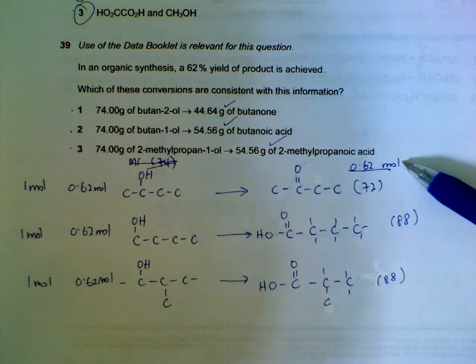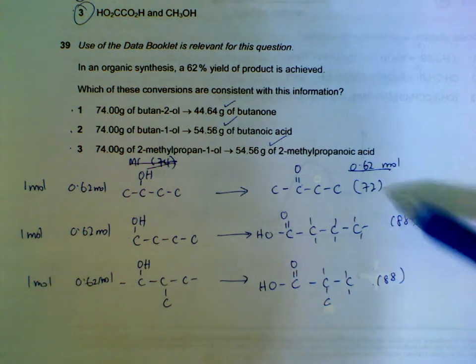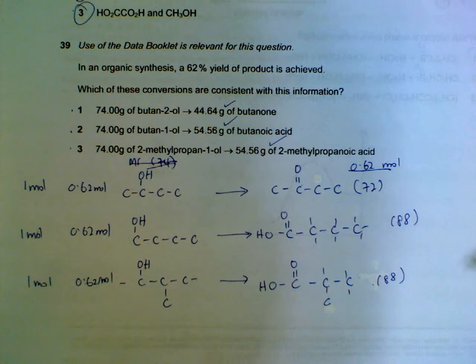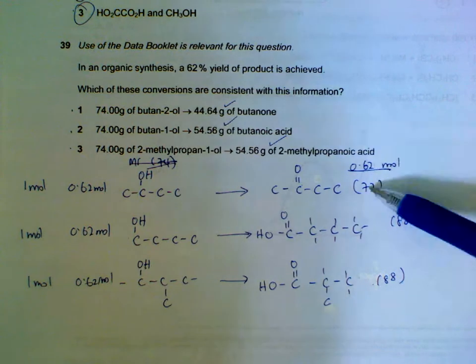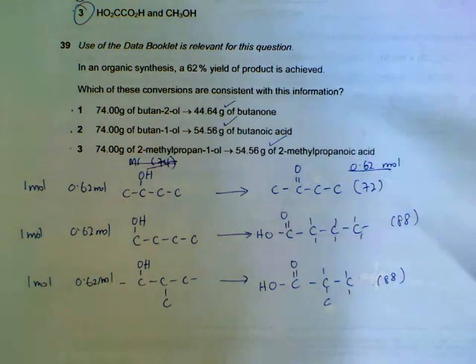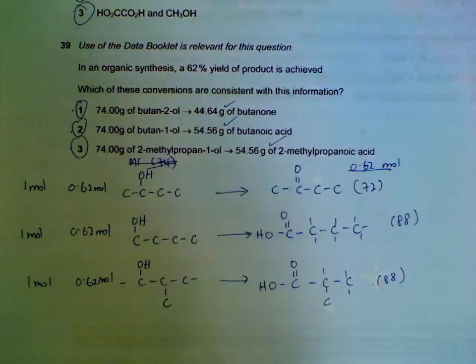How can we find the mass of products? Well, just take 0.62 multiply by the respective MR of your products. 72, 88, and 88. You will see that they will give us these three masses. Meaning, all three are correct.